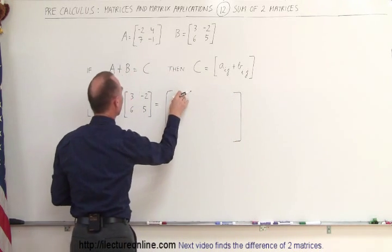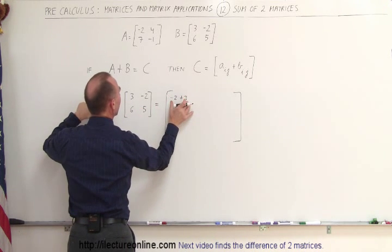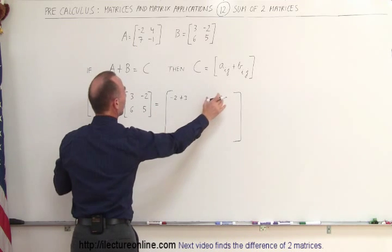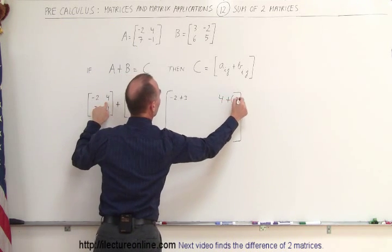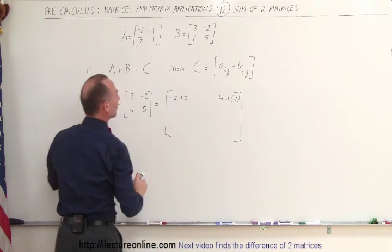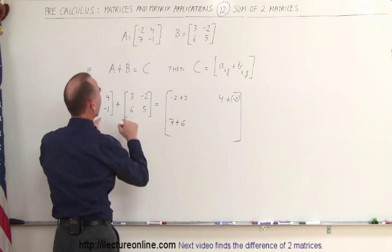The upper left corner, that element right there, will simply be the sum of these two, so it will be minus 2 plus 3, that will be the element of C in the upper left corner. The one in the upper right corner will be 4 plus a minus 2, so we use parentheses to separate the signs. In the lower left corner, this will become 7 plus 6, and we add these two together.